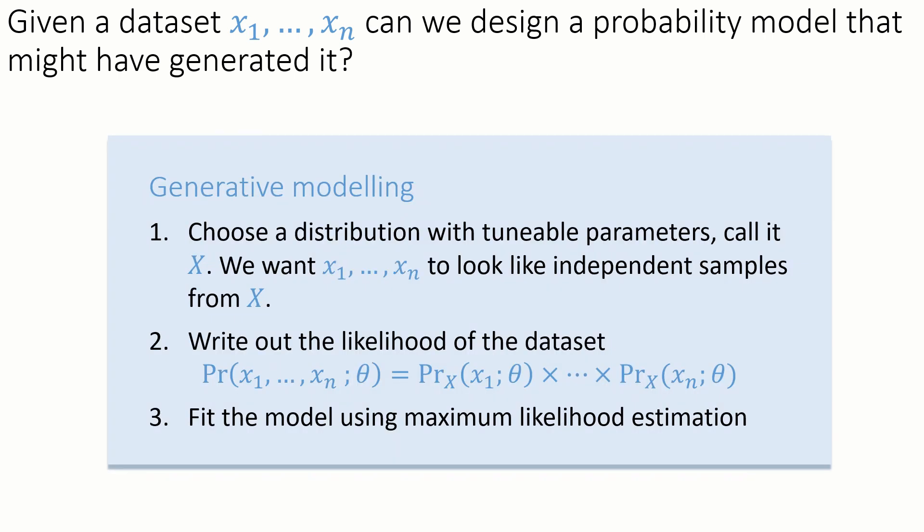This is called generative modelling for the obvious reason that it's about implementing a random variable generator. Let's state the overall approach more abstractly. First step, choose a distribution with tunable parameters, call it X. We want our dataset x1 to xn to look like independent samples drawn from the distribution big X.